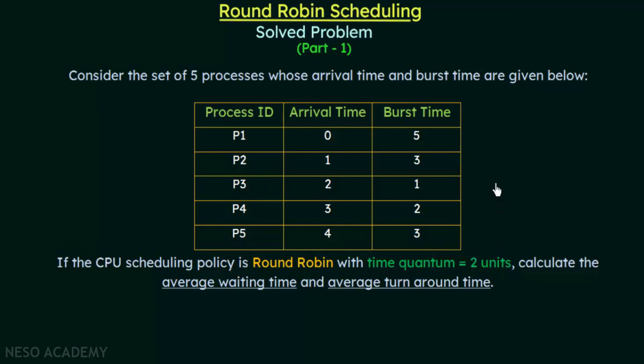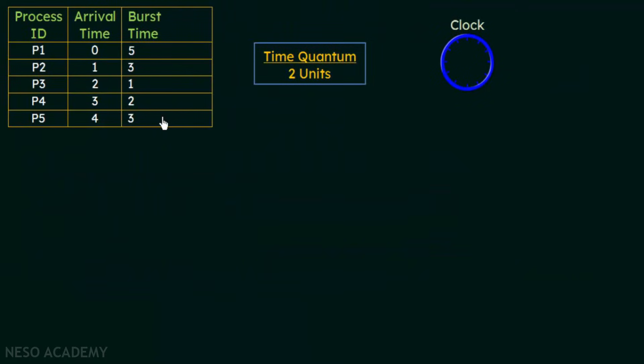In round robin scheduling, each process is allowed to execute for a particular time quantum — which is 2 units in this case — and after the time quantum the process will be preempted. The CPU will then be given to the next process waiting in the queue. Since the arrival times are given here, there are many things we need to keep in mind. I have copied the same table here, and I am using a clock to keep track of time at different units.